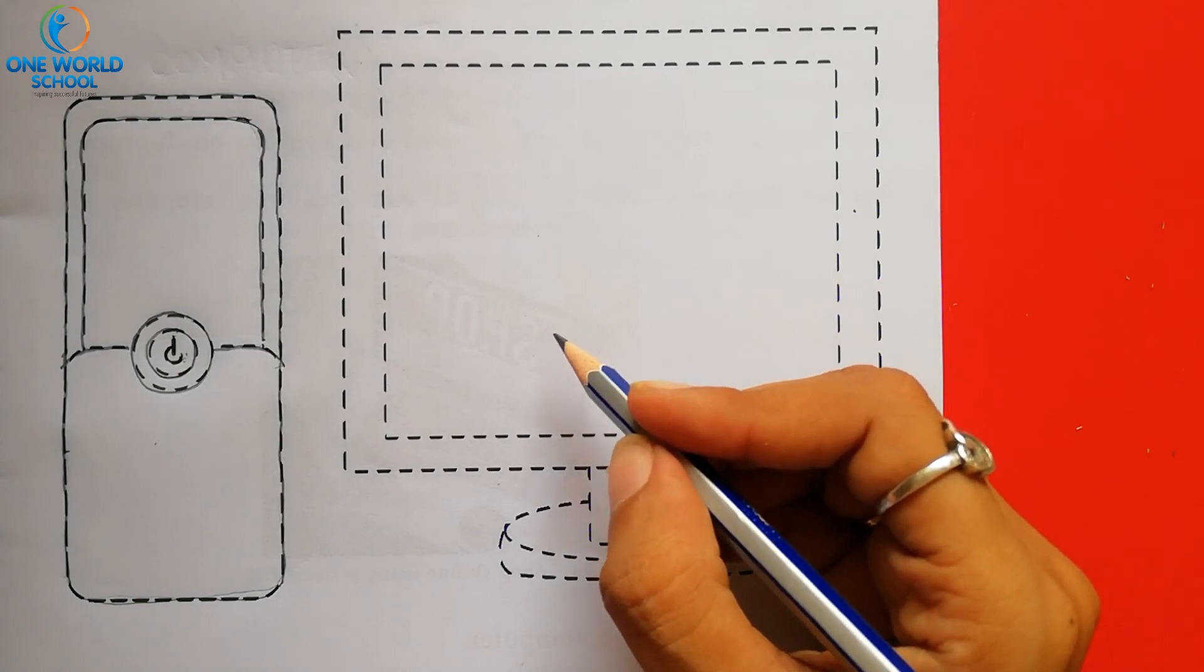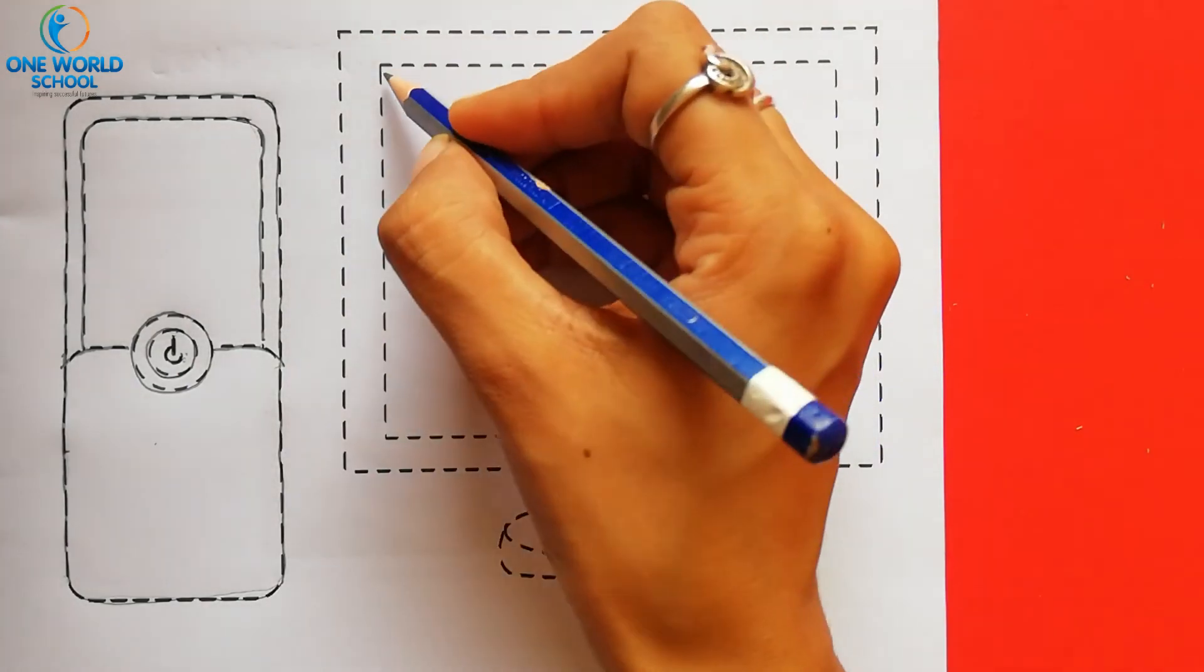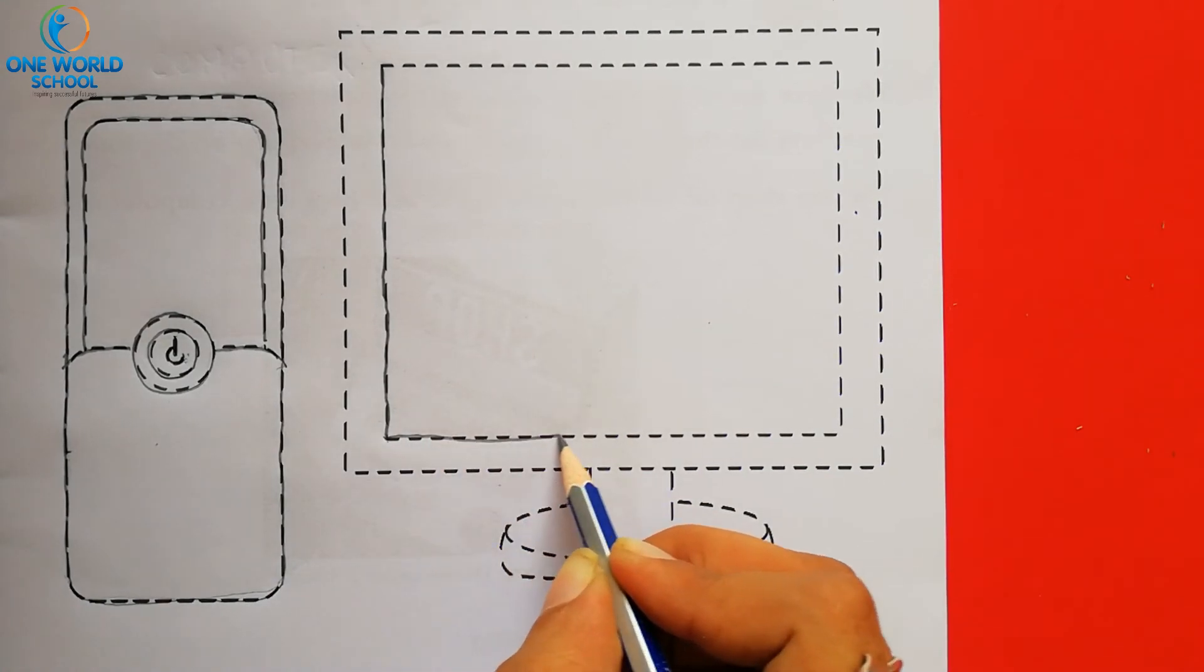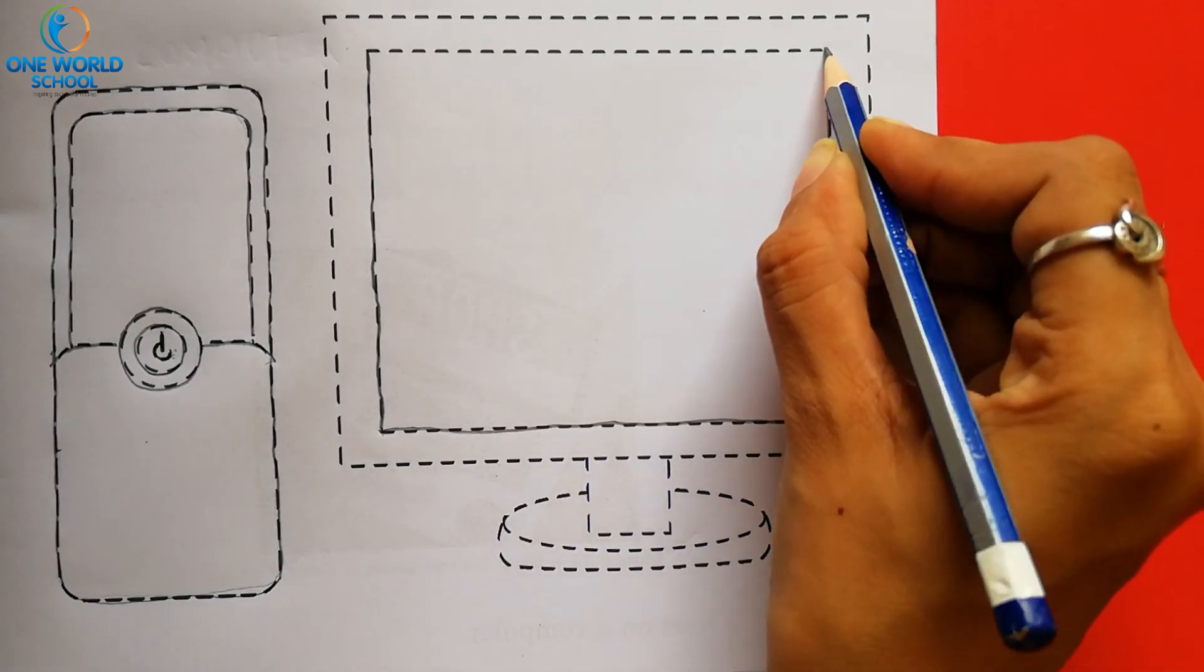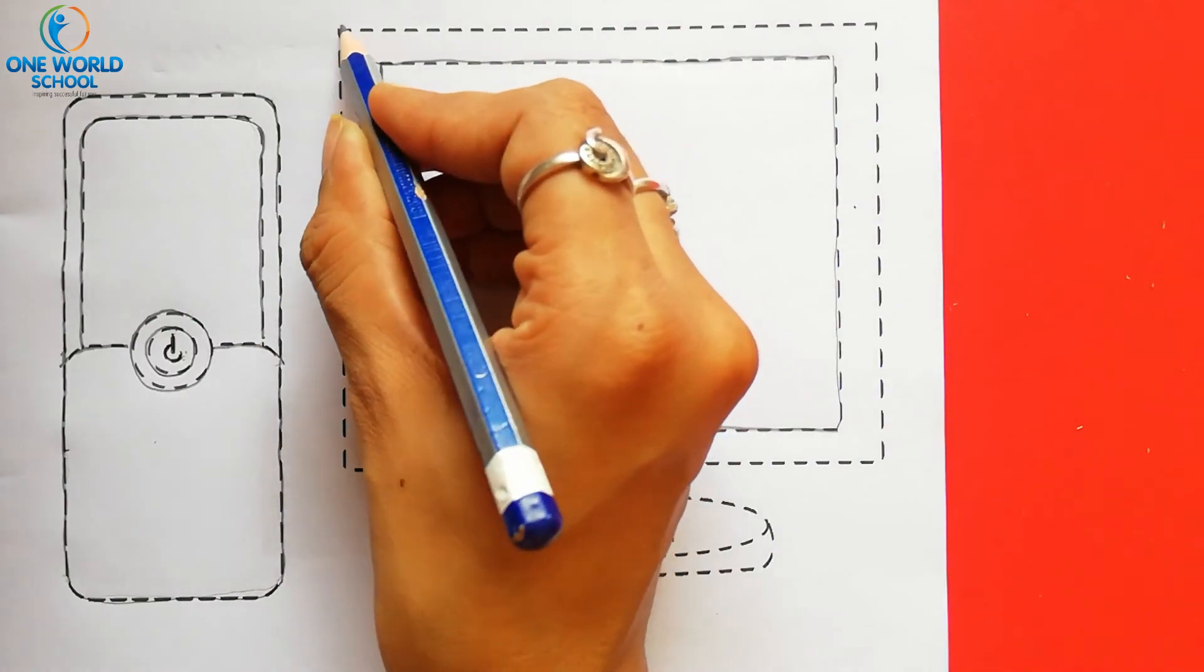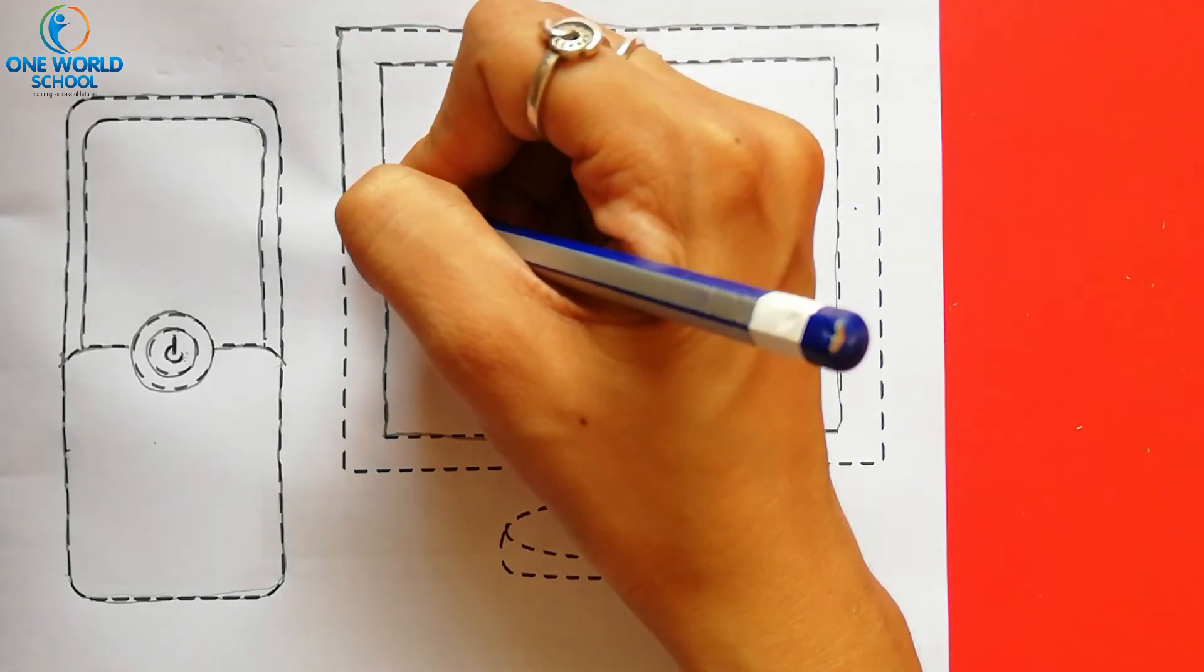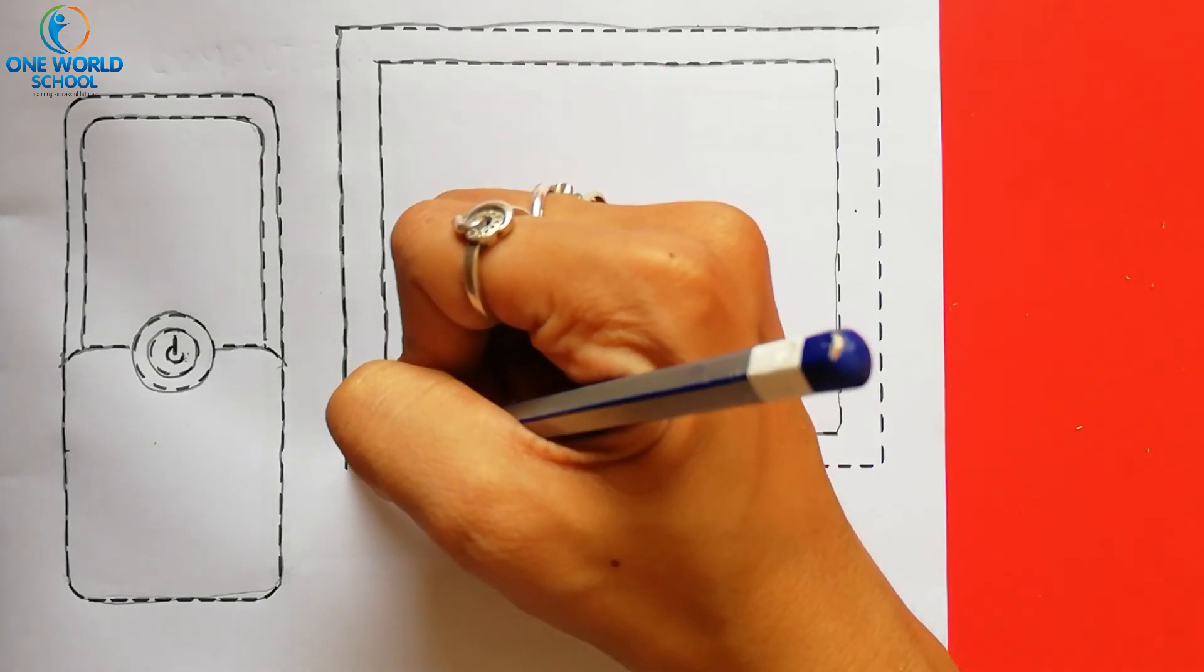Now second one. हमें किसके ऊपर trace करना है. Monitor के ऊपर. Let's do like this. First standing line. Then after slipping line. Then after standing line. And then after slipping line. Again. दूसरी बार. Slipping line. Then after standing line. Slowly slowly करना है. Okay. Dots के बाहर नहीं जाना चाहिए. You have to trace the dots only.